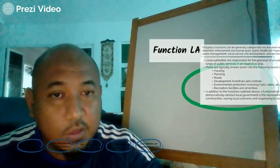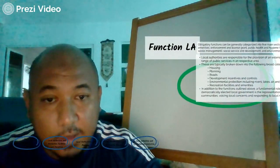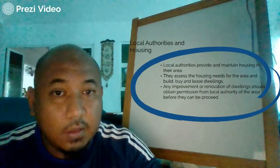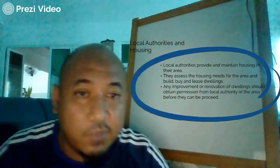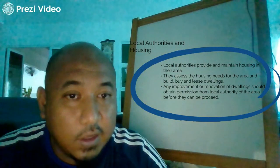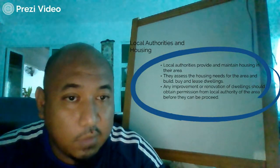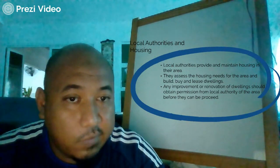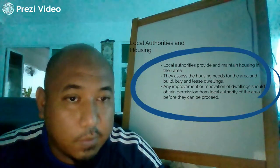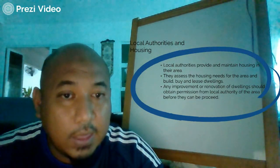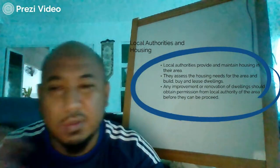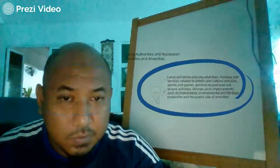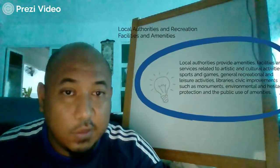A fundamental role of democratically elected local government is to represent local communities, voicing local concerns and responding to local needs. Regarding housing, the local authority's function is to provide and maintain housing in their areas. They assess housing needs and build dwellings. Any improvement or renovation of a dwelling must obtain permission from the local authority before it can be processed.